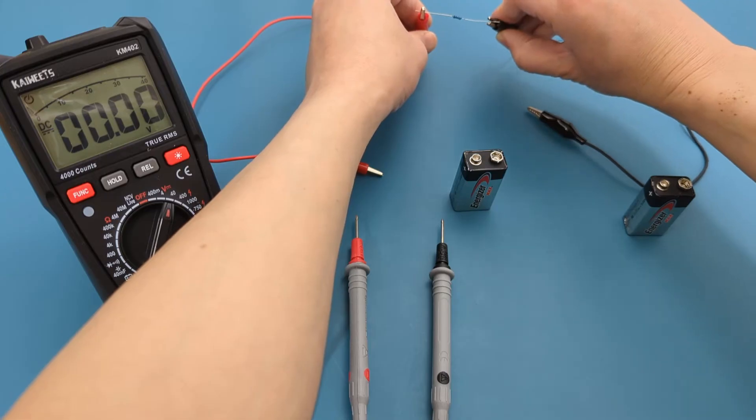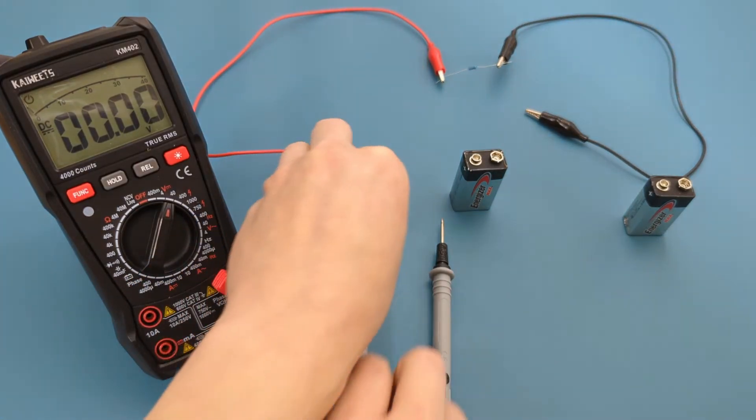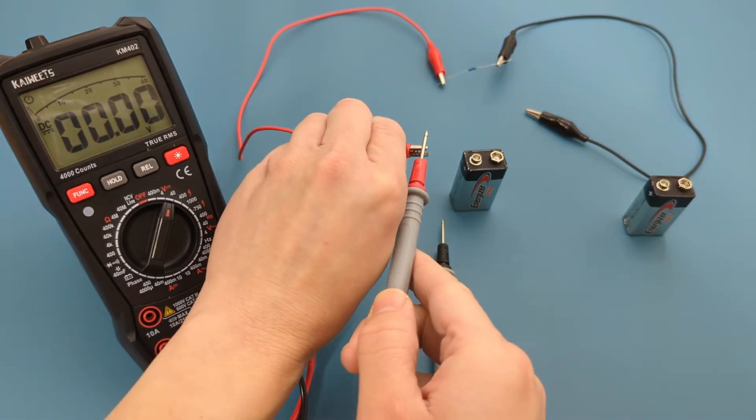Connect the alligator clips to the resistor. Connect the other end of the alligator clips to the probes.